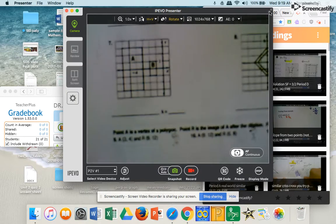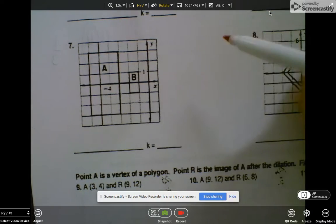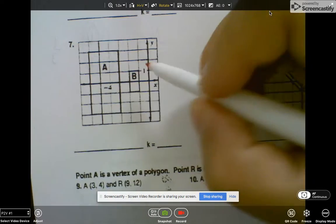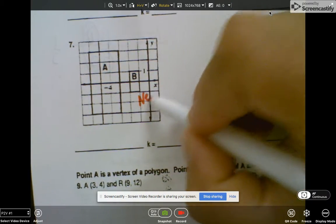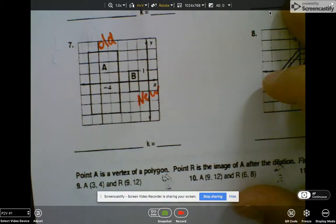Alright, for tonight's homework if you're doing this and watching on Google Classrooms, number seven: you're going to do new divided by old. So we talked about we're going A to B, so this is your new coordinate, your new figure, this is your old figure.